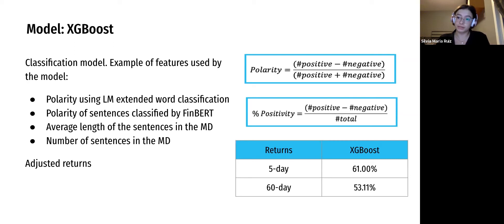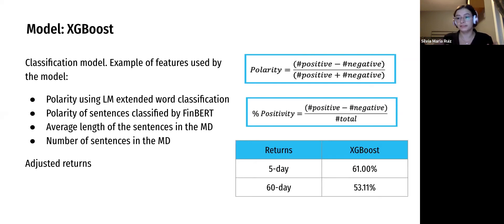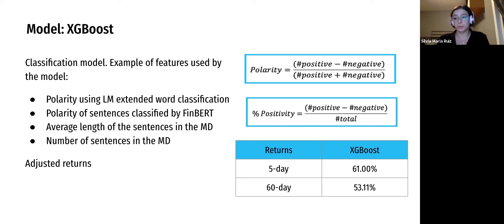We ran an XGBoost model, and our Y variable or prediction was whether the stock price would go up or down. We accounted for market returns — the way we did that is we set a time interval, say five days. We take the stock price one day before the filing is released, then the report is released, and five days after — that's the five-day return. If that is greater than the return of the market, that's a one; if it's less, that's a minus one.